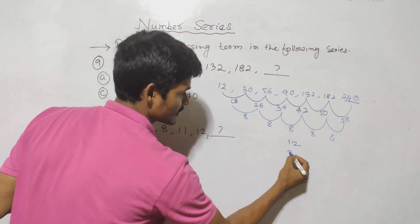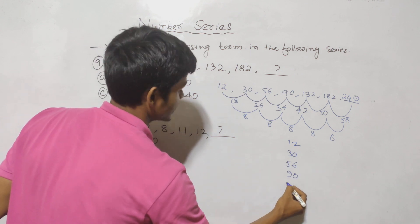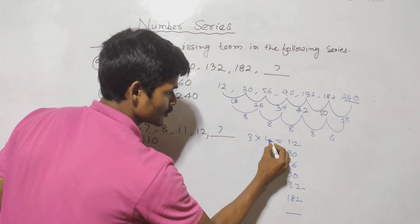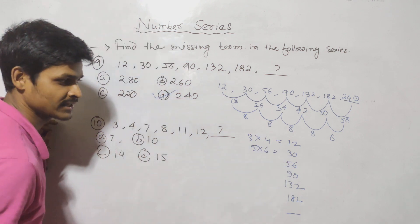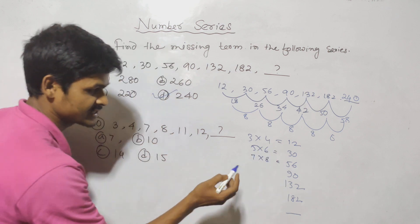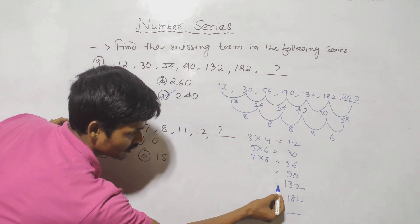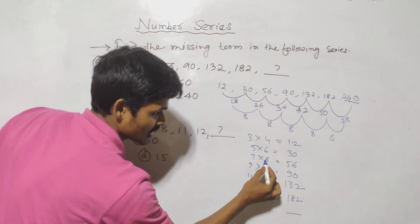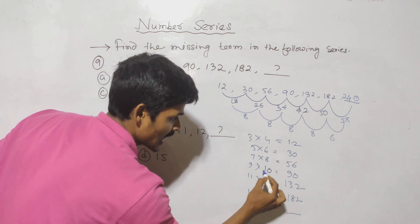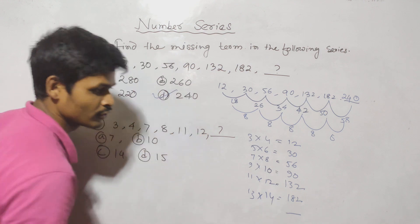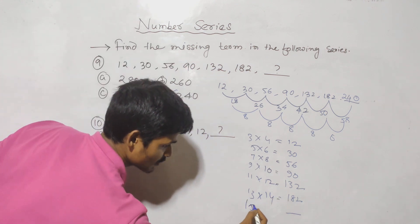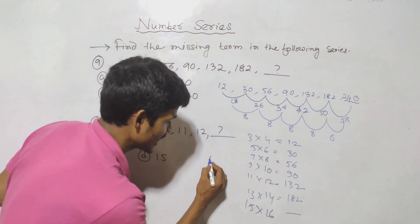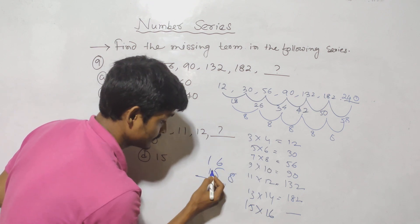This is how we do our answer: 12, next is 30, next is 56, next is 90, next is 132, next is 182, next is 240. The pattern: 3×4=12, 5×6=30, 7×8=56, 8×9 and continuing — 9×10=90, 11×12=132, 13×14=182, 15×16=240. That confirms the answer.